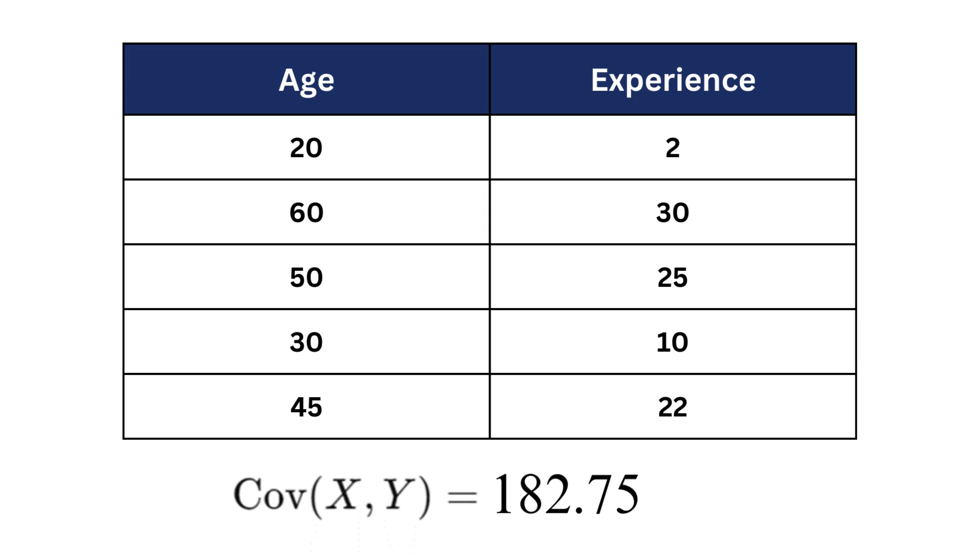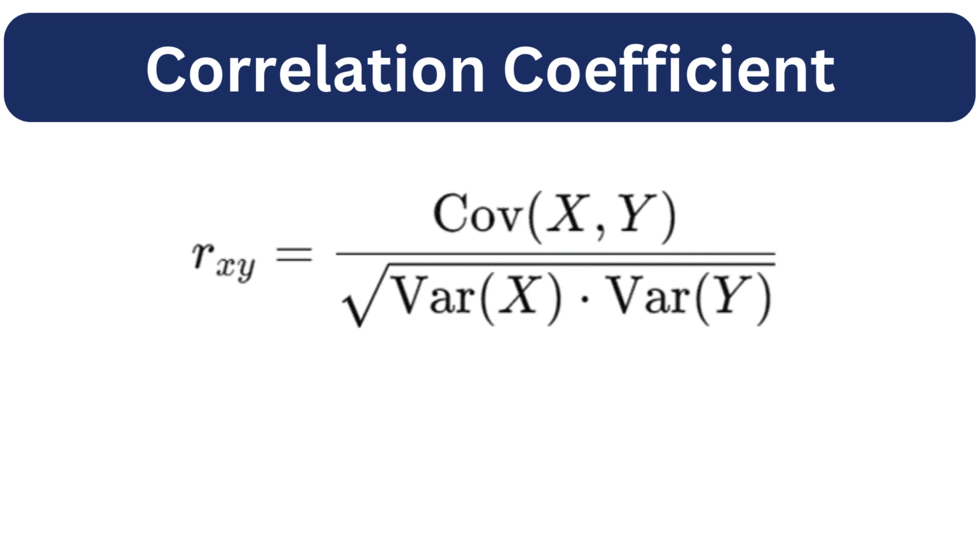Let's find out by calculating the R coefficient. To calculate the R coefficient, we divide the covariance by the product of the standard deviations of the two variables. The resulting value ranges from negative one to positive one.